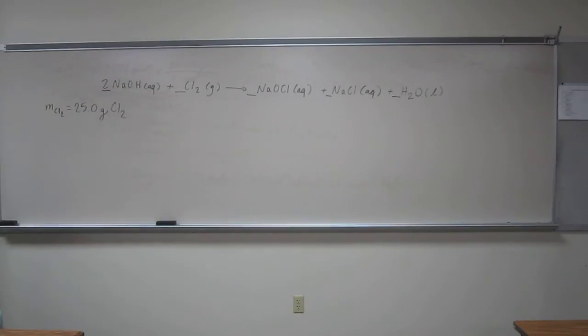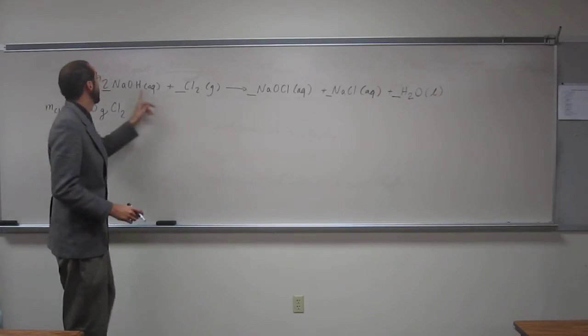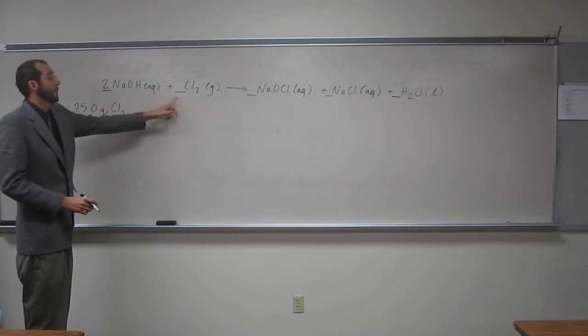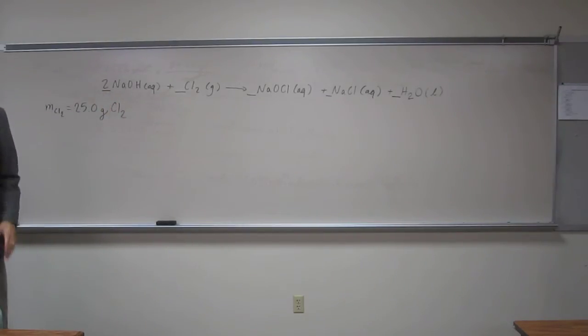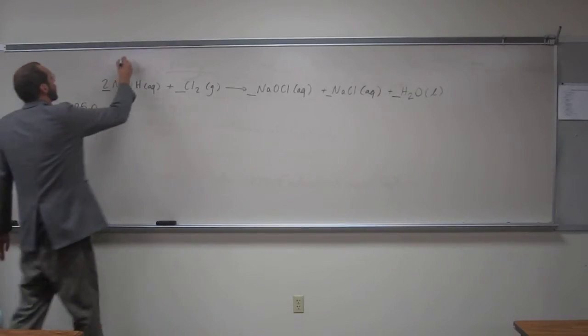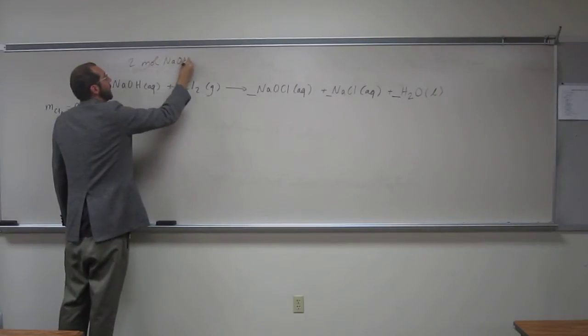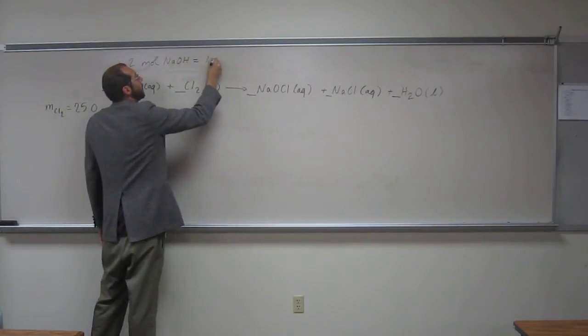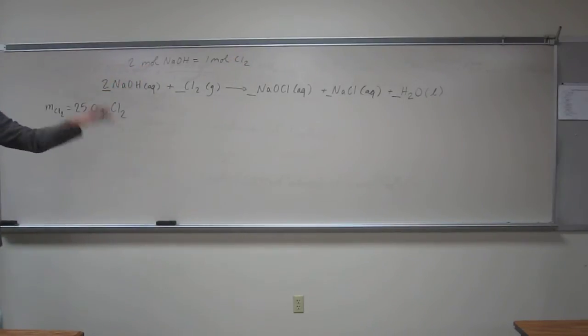Since it's a mole-to-mole conversion and it wants us to eventually convert chlorine to sodium hydroxide, that gives us the actual ratio. I'm just going to write that ratio: two moles of sodium hydroxide equals one mole of chlorine gas. That's what we're going to need to work with.